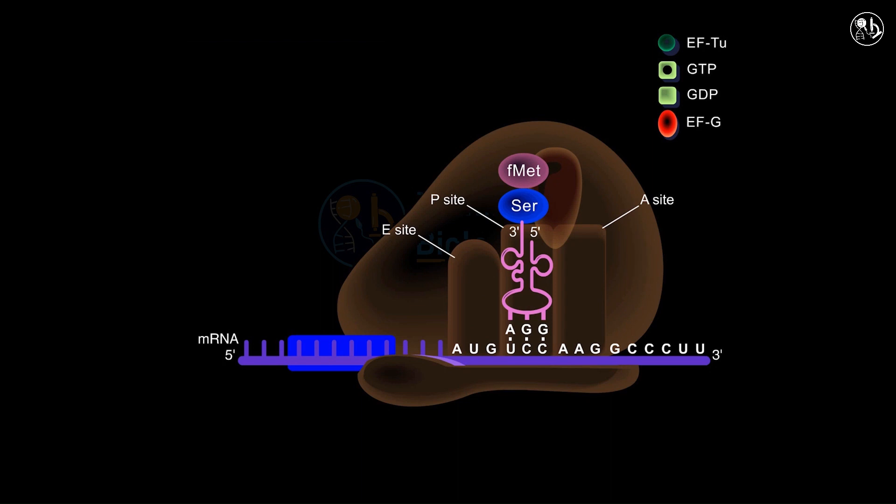With the A site now vacant, it is ready to receive the next aminoacyl tRNA, thus allowing the elongation cycle to persist.